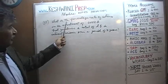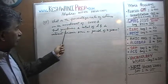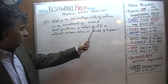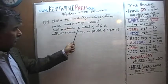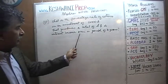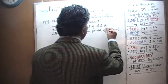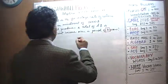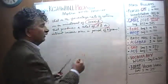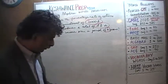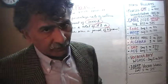The question is: what is the percentage rate of return on an investment of $1,000 that produces a total of D dollars in interest income over a period of N years? It takes N years and produces a total of D dollars on an investment of $1,000. The question is: what does this translate into as a rate of return? Let's find out, shall we?